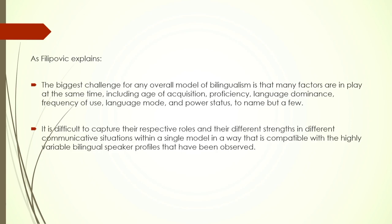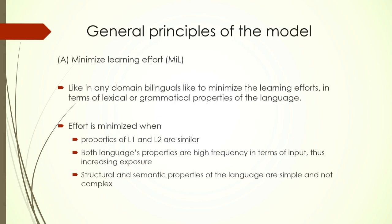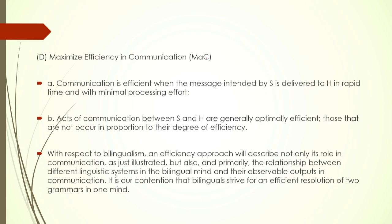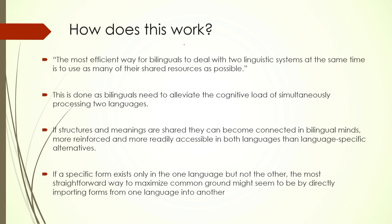Before going to the principles, the underlying logic that Pilipovich explains is that the biggest challenge for any overall model is that there are so many factors at play at any given point of time, and many of them may not always be psycholinguistic properties — for example, power, status, frequency of use, and so on. The five general principles they have proposed are: minimizing learning effort, minimizing processing effort, maximizing expressive power, maximizing efficiency in communication, and doing all of that by maximizing common ground.